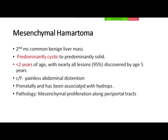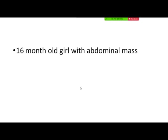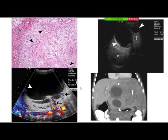The second most common benign tumor is mesenchymal hamartoma. It is predominantly cystic and presents in children less than 2 years of age with painless abdominal distension. If present prenatally, it has a hydrops association. Case: a 16-month-old girl with abdominal mass. CT shows a solid-cystic mass. On ultrasound, the cystic component has low-level echoes and the solid component has minimal vascularity, with septations in the solid-cystic mass. There is a mesenchymal component, stromal component, and cystic component, with the cystic component predominating.